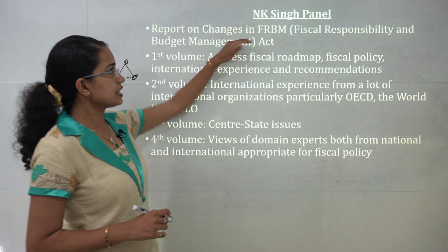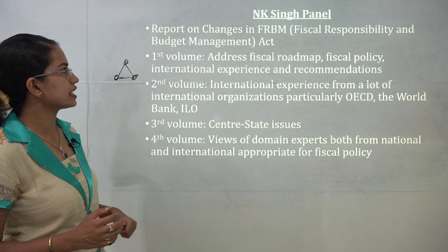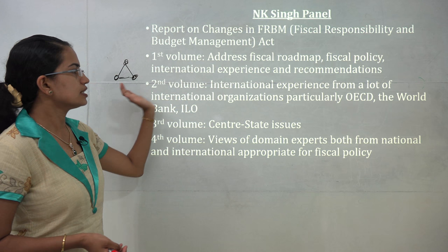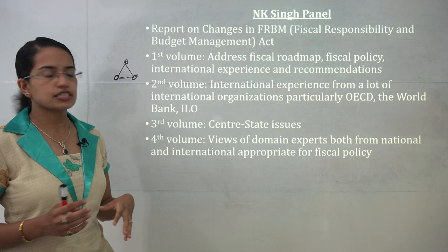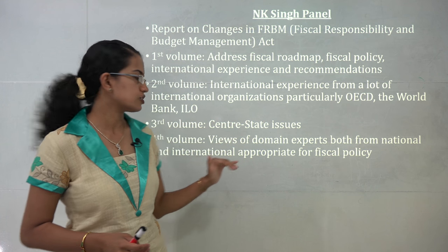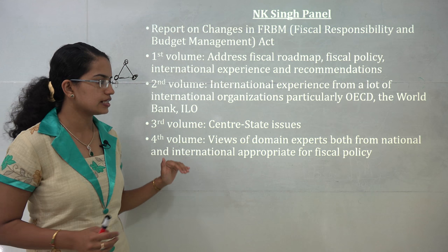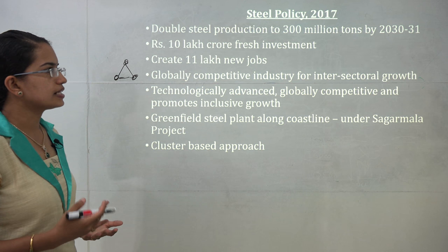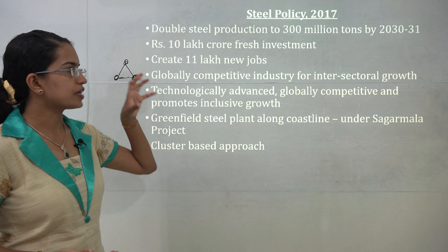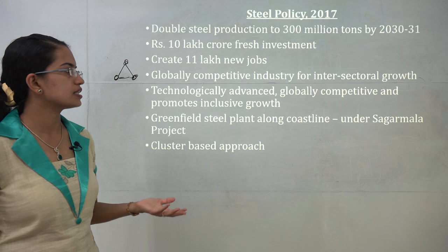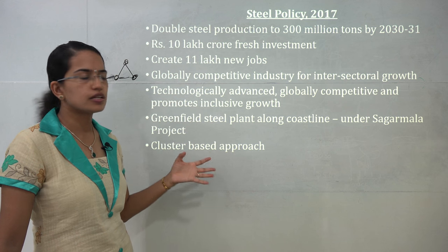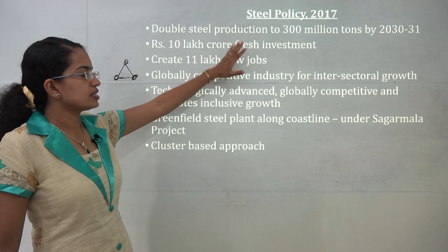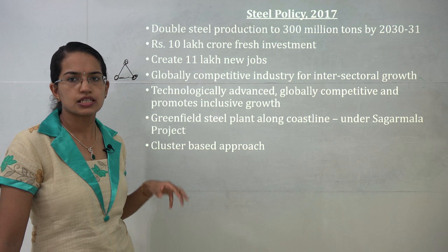The NK Singh panel brought up reports on changes to the Fiscal Responsibility and Budget Management Act. It had 4 volumes: the 1st on fiscal roadmap and fiscal policy, the 2nd on international experiences with World Bank and ILO, the 3rd on center-state issues, and the 4th on national and international appropriateness of fiscal policy. The Steel Policy of 2017 aims to double steel production by 2030, bring fresh investment, create new jobs, make the industry globally competitive, bring technological advancements, and promote inclusive growth. One trial project is the greenfield steel project along the coastline under the Sagarmala project.